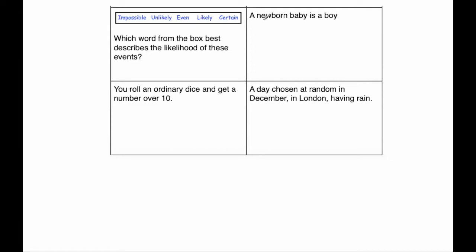Our next question is a probability skills question. It says which word from the box best describes the likelihood of these events? Okay, so we've got impossible, unlikely, even chance, likely and certain. So a newborn baby being a boy, well that's going to be even chance.